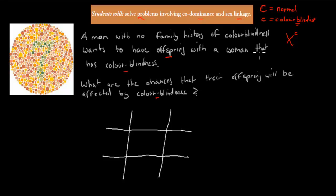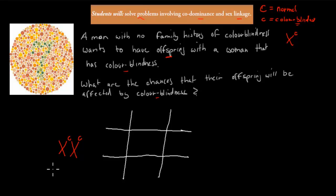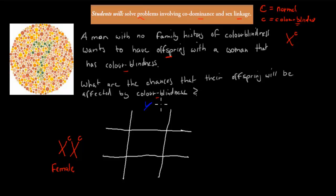We know the female has colour blindness, which means she would have to have two alleles which are both recessive — X^c X^c. If she had one dominant allele she wouldn't be colour blind. The male has normal vision; his Y chromosome has no relevant genes on it, so we write Y, and his X chromosome must be normal — X^C — because he does not have colour blindness.